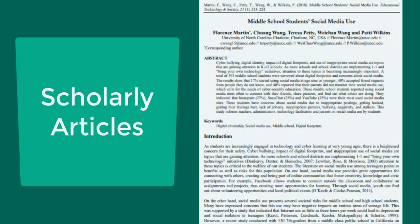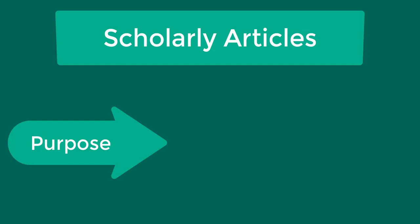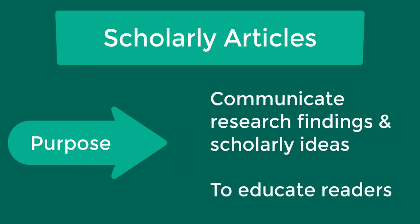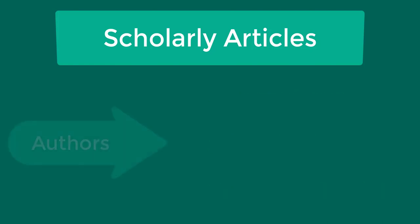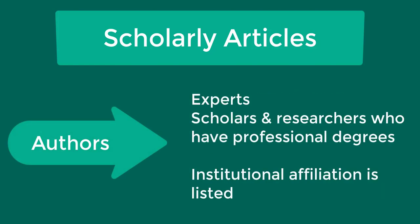We'll start by talking about scholarly peer-reviewed articles. Articles in scholarly journals are high-quality resources that are both written by experts and reviewed by experts. The purpose of scholarly peer-reviewed articles is to communicate research findings and scholarly ideas, and to educate readers. Authors of these articles are experts, including scholars and researchers, such as your professors.